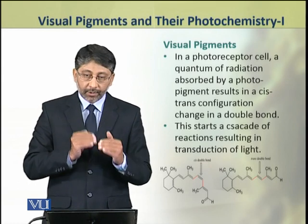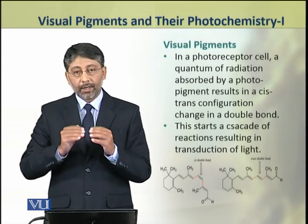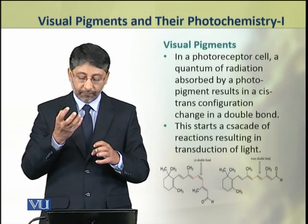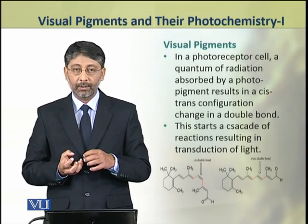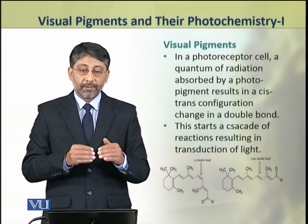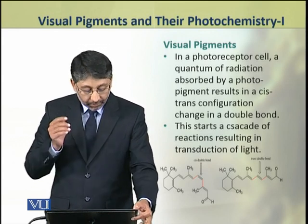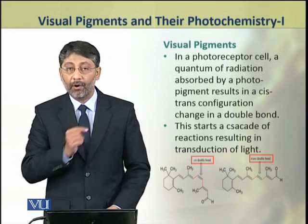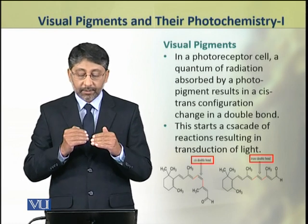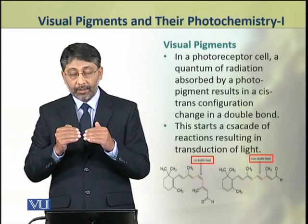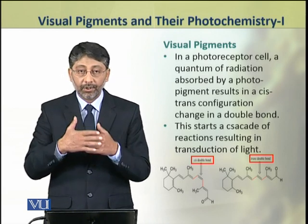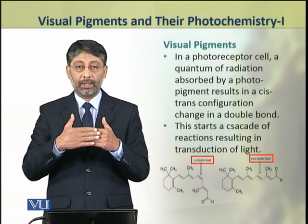In a photoreceptor cell, a quantum of radiation absorbed by the photopigment results in a cis-trans configuration change in one double bond. This cis-trans configuration change in the double bond means that the double bond's direction and angle is changed.